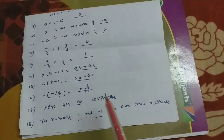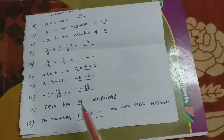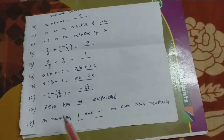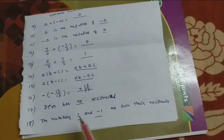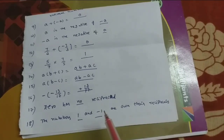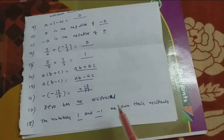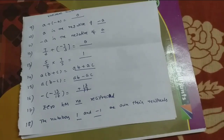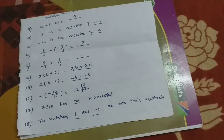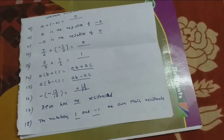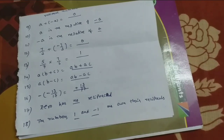0 has no reciprocal. The numbers 1 and minus 1 are their own reciprocals. 1 by 1 is equal to 1. Minus 1 by 1 is equal to minus 1.